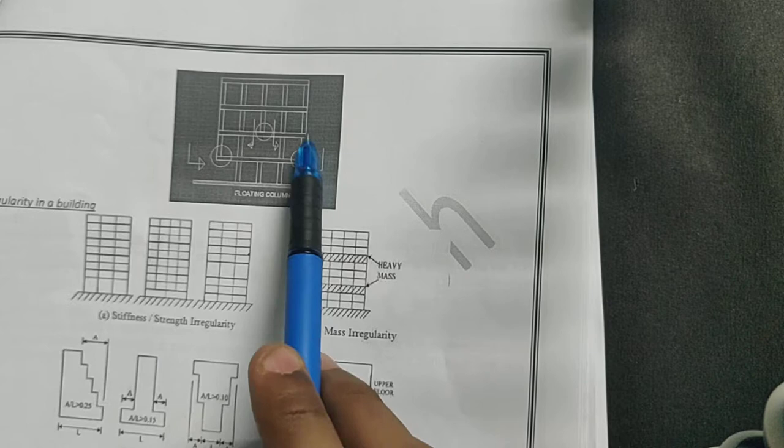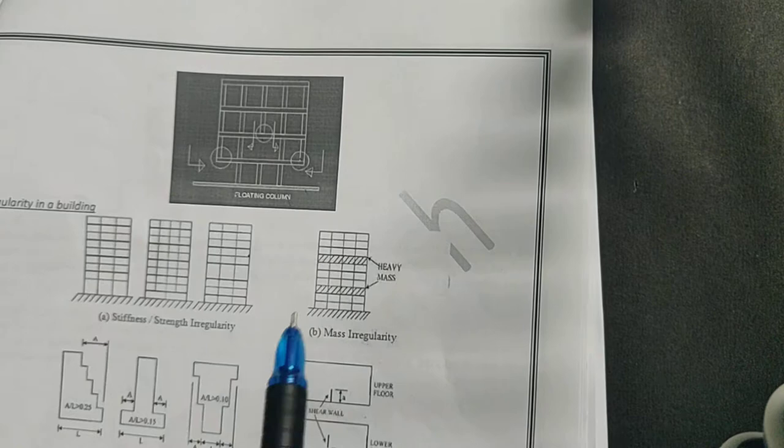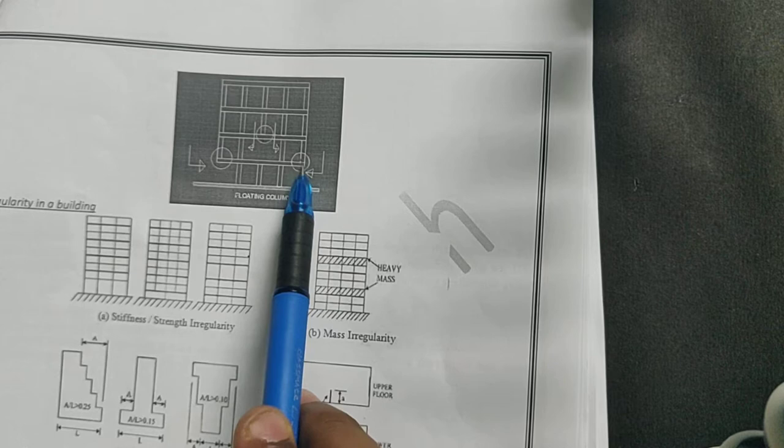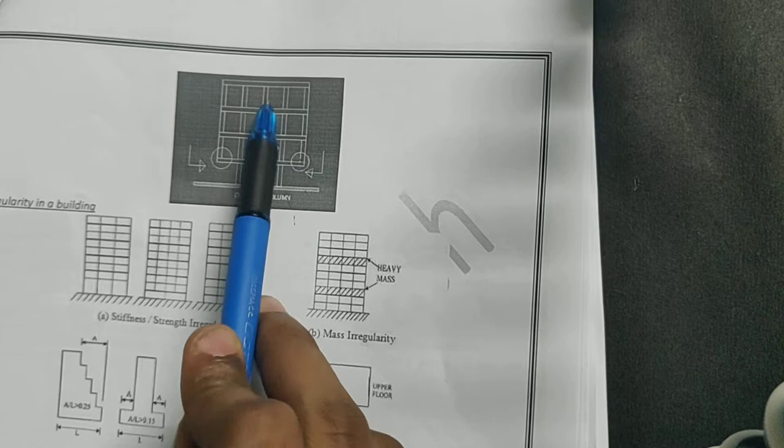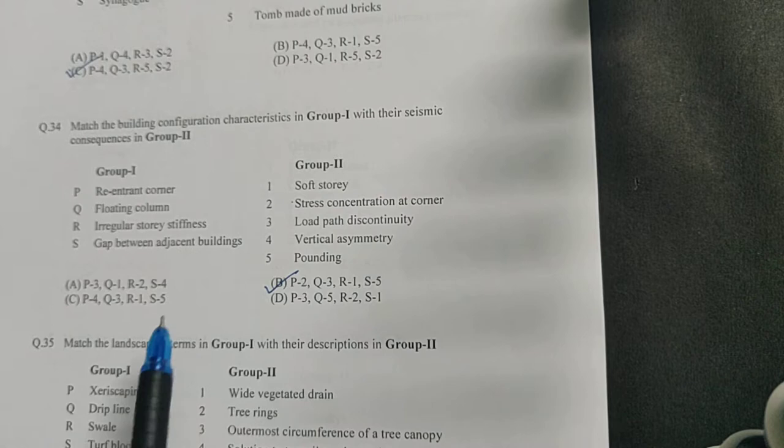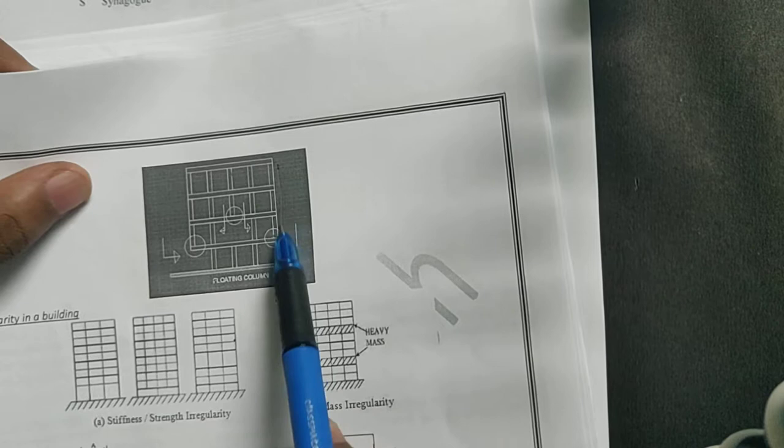What a column does is vertically transfer the load down. At this point it is not able to transfer the load down vertically, that's why it would be known as floating column. Due to a floating column there would be load path discontinuity because the load path is down and then there is no load path.